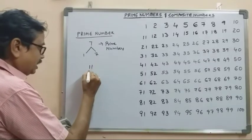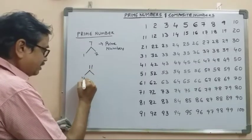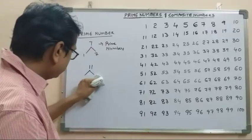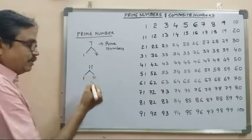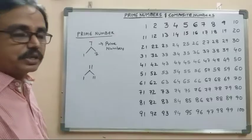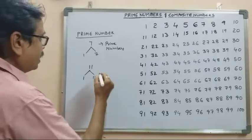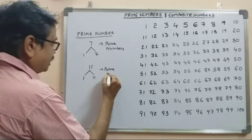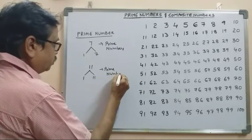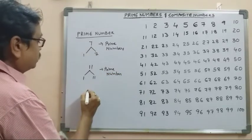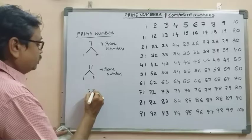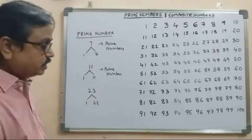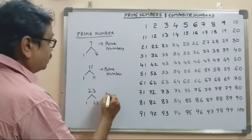For example, number 11 — its factors are one and eleven, one and itself — that is the prime number. 11 is prime. And 23 is also a prime number.